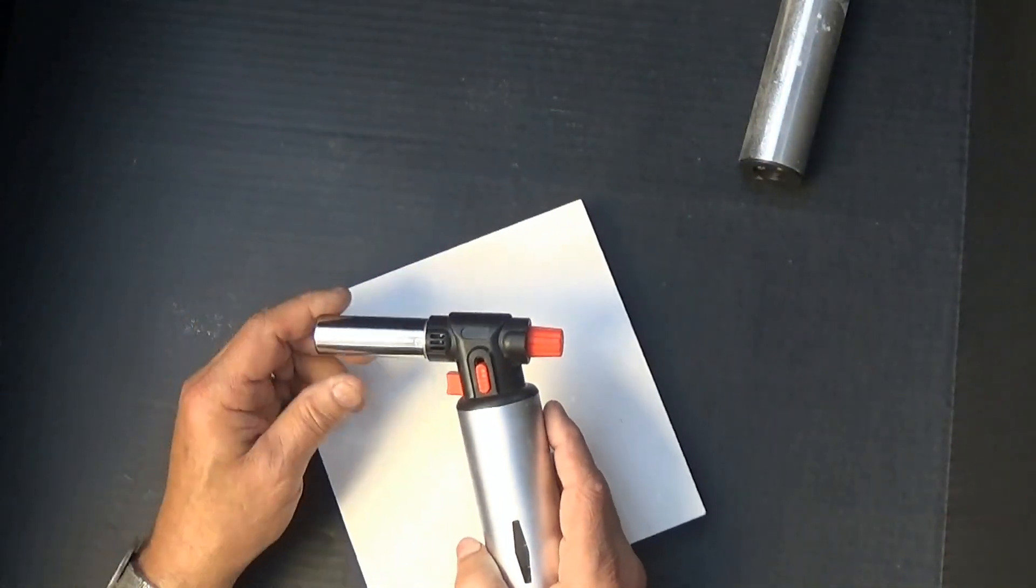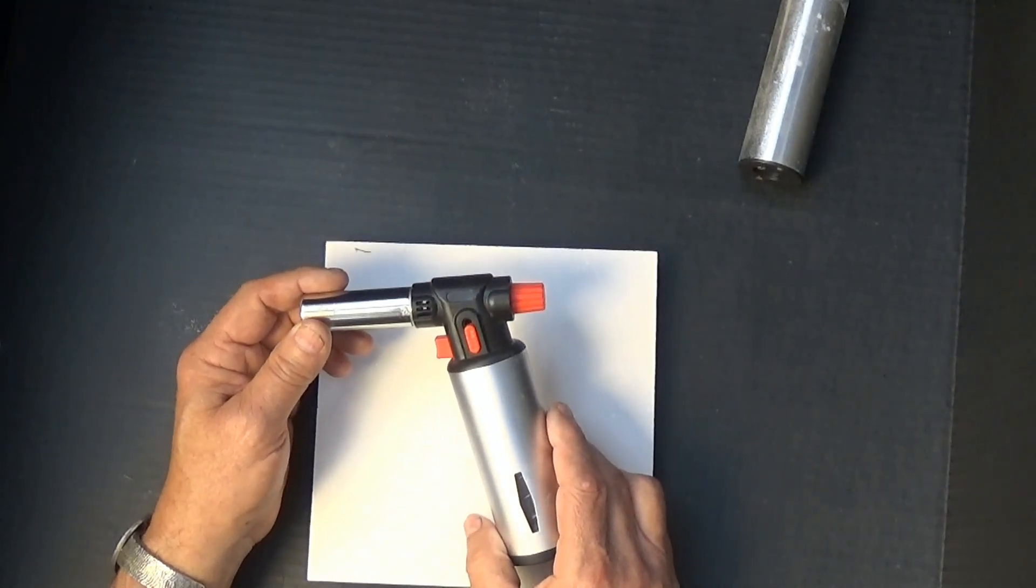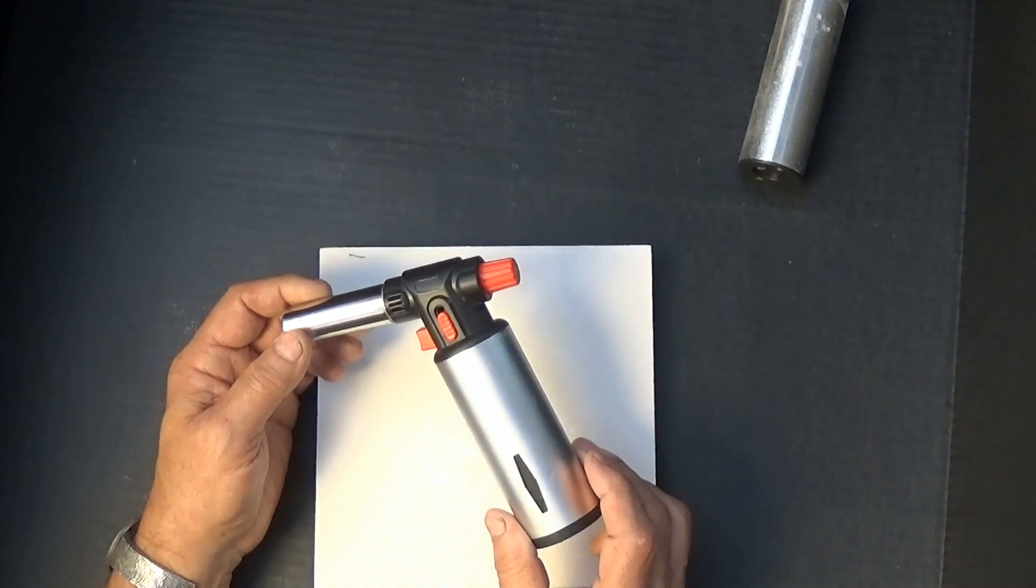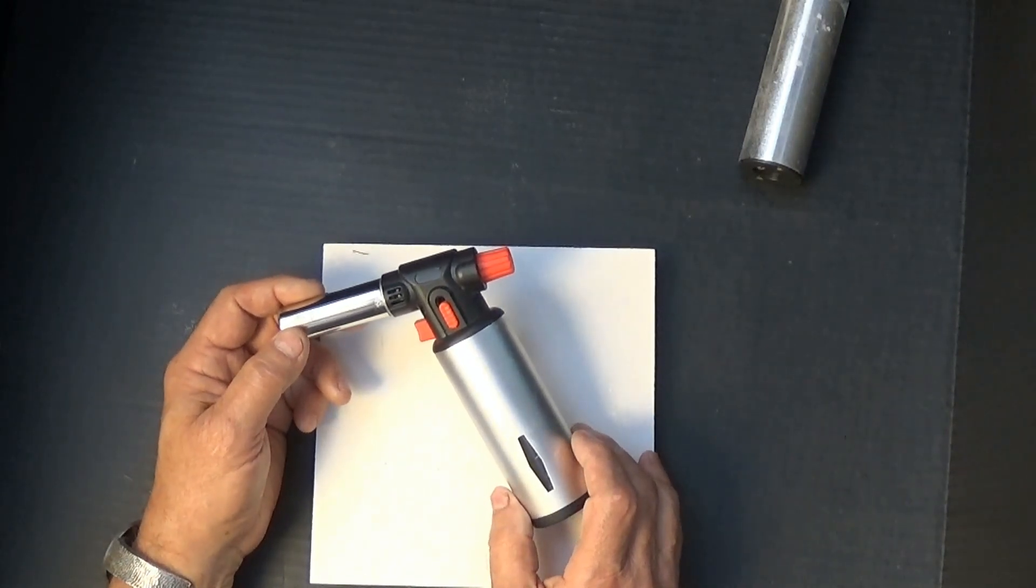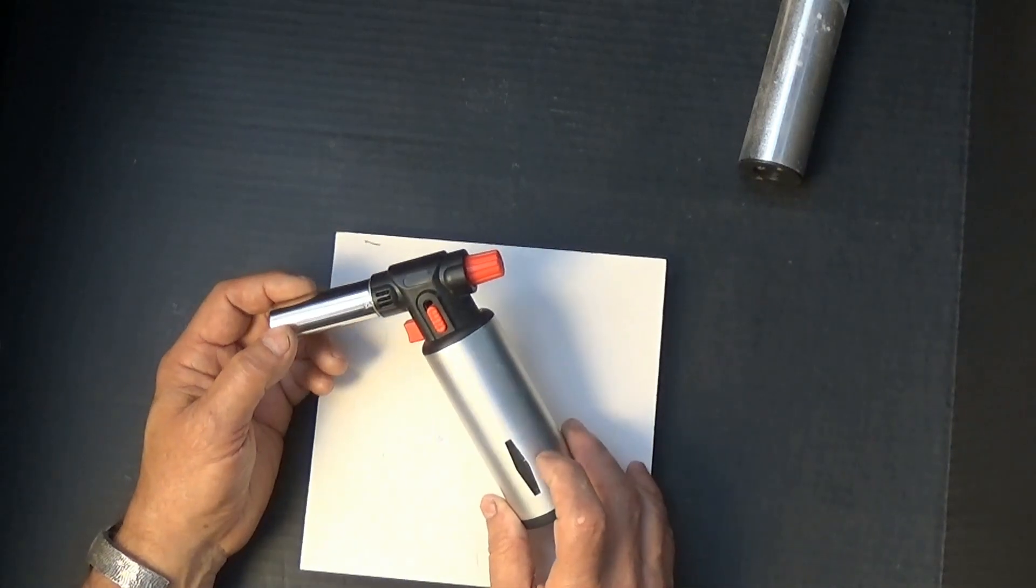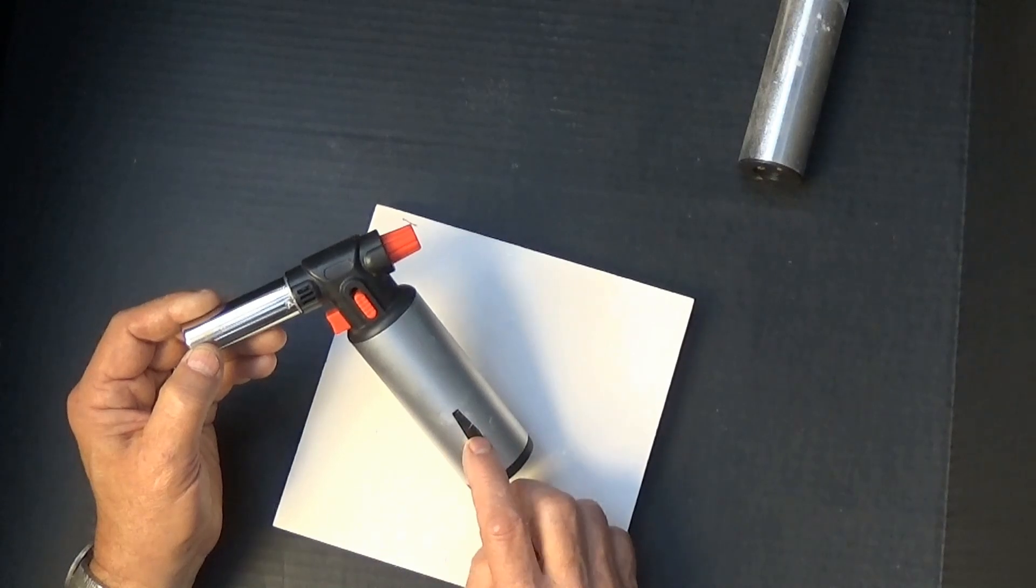After a lot of experimentation and use, I came up with a torch that has a couple of really nice features that the other torches don't, and that are always a sticking point with students. First off, we have a gauge. When you fill this torch up, you fill it to that point right there on the gauge.